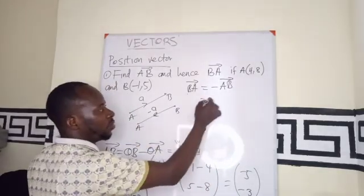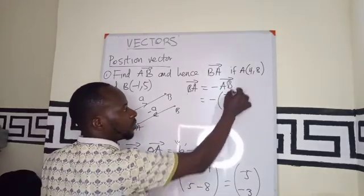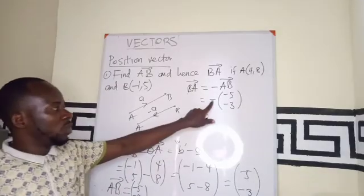So, that is going to be negative into bracket, (-5, -3).